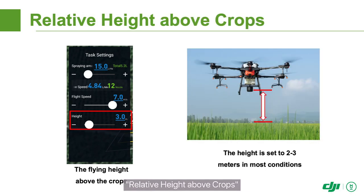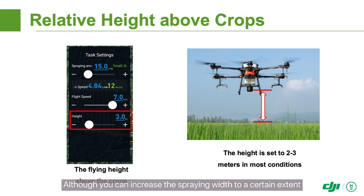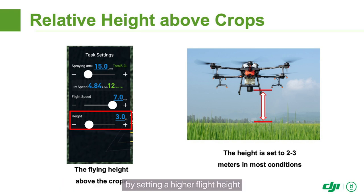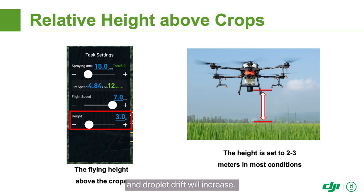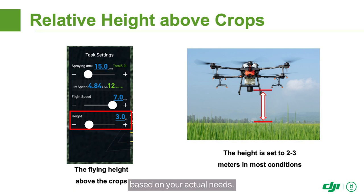Relative height above crops refers to the height from the crops to the radar and agri-drone. It determines the spraying width and the downward wind field. Although you can increase the spraying width to a certain extent by setting a higher flight height, the downward wind field of the droplets will decrease and droplet drift will increase. Therefore, a suitable flight height should be chosen for each model based on your actual needs.